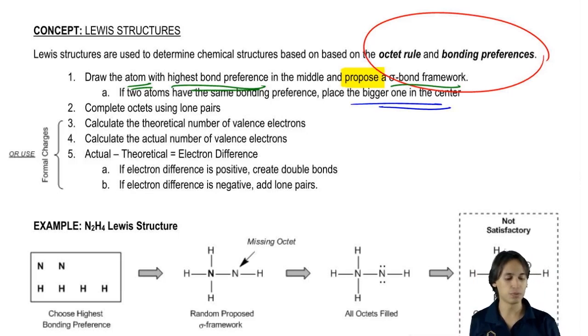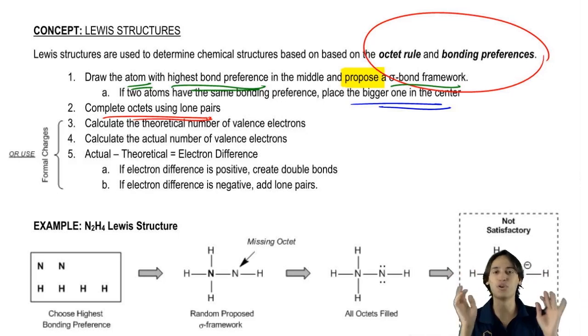Then what you do is you complete all the octets using lone pairs. That means that once you draw the sigma bond framework, you're going to fill everything in with just lone pairs everywhere to complete everyone's octet. So now this thing is going to be loaded with dots. It's going to look like it got hit with a shotgun.